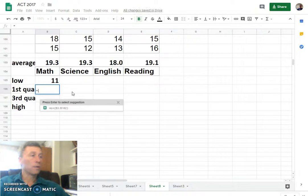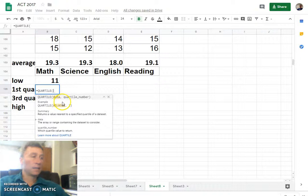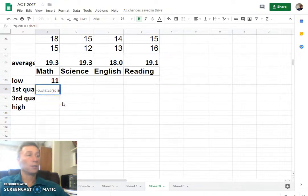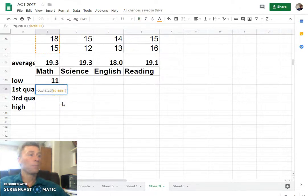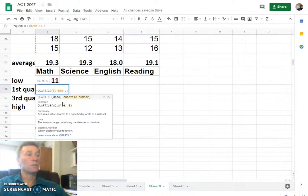And for quartile, we say equals Q, U, A, and I'll just select quartile. Then it needs the data, that's also B2 to B101, or you can just select that. But then you also need to put which quartile, let's do the first quartile.